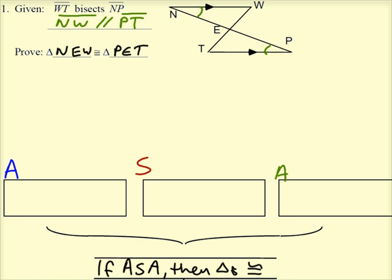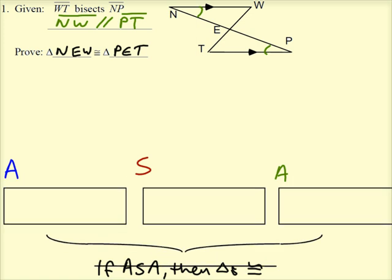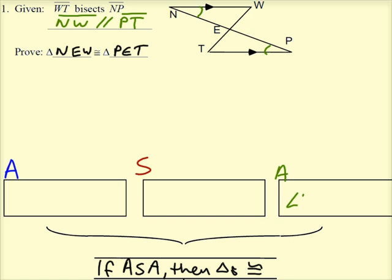We've established that angle N is congruent to angle P. And the reason why is we had those parallel lines, NW and PT.